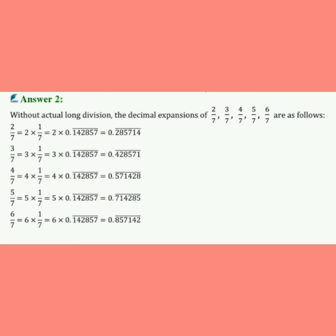इसी तरीके से 3/7 को convert करेंगे। 3/7 = 3 × (1/7)। 1/7 की जगह रखा 0.142857 bar, तो 3 × 0.142857 bar = 0.428571 bar। Copy में proper तरीके से multiply करके देखेंगे तो यही answer आएगा। Bar की जगह bar ही आएगा — बस multiply करना है और bar लगाना न भूलें, वरना answer गलत होगा।